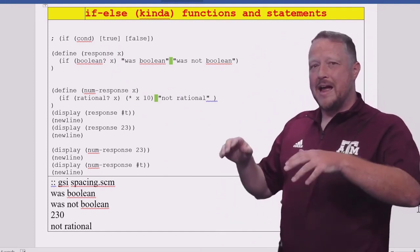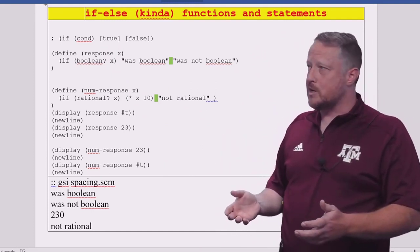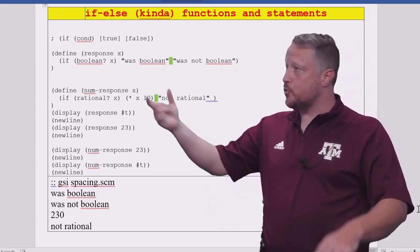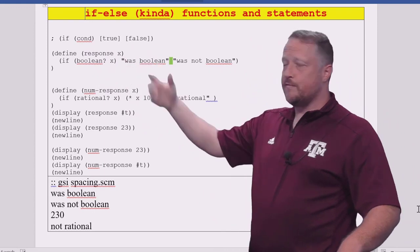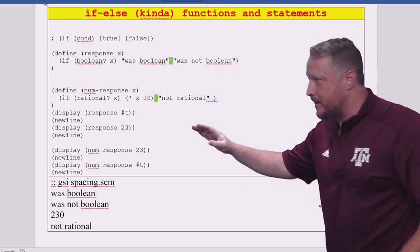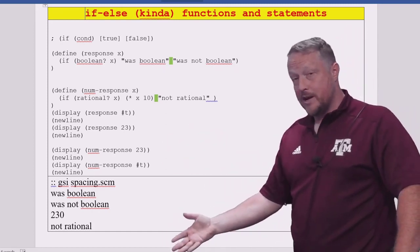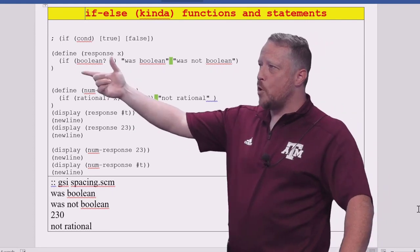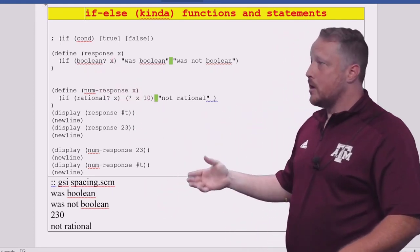Now, when we put that into perspective and with the parentheses issue that I just talked about, we also have to worry about the spacing of when the true portion happens and when the false portion happens. So here's two functions in Scheme that I created, and then these are functions called later and actually running: response and num-response. They both have an if-else condition in reality.